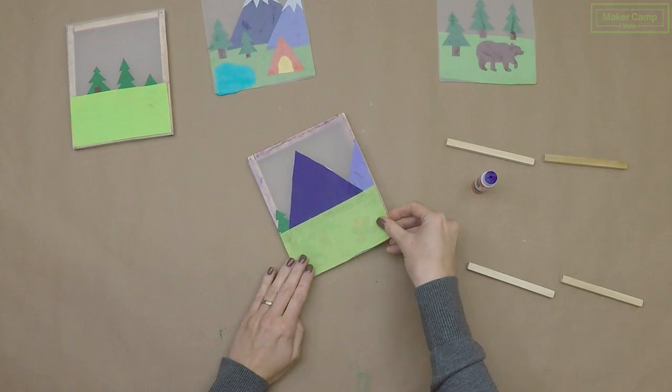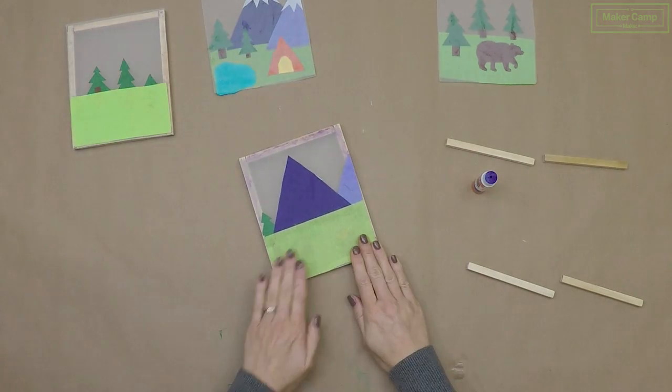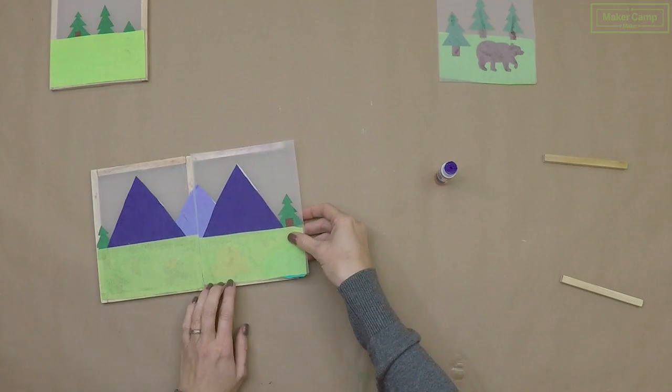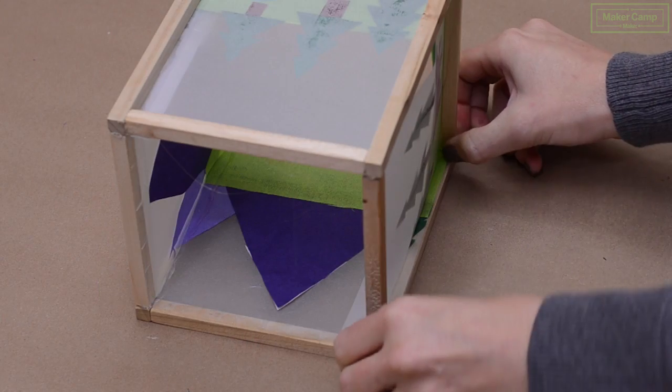Attach your vellum to the completed sides first and then do the second and fourth sides to just the top and bottom parts of the frame. We'll assemble it all together at the end.